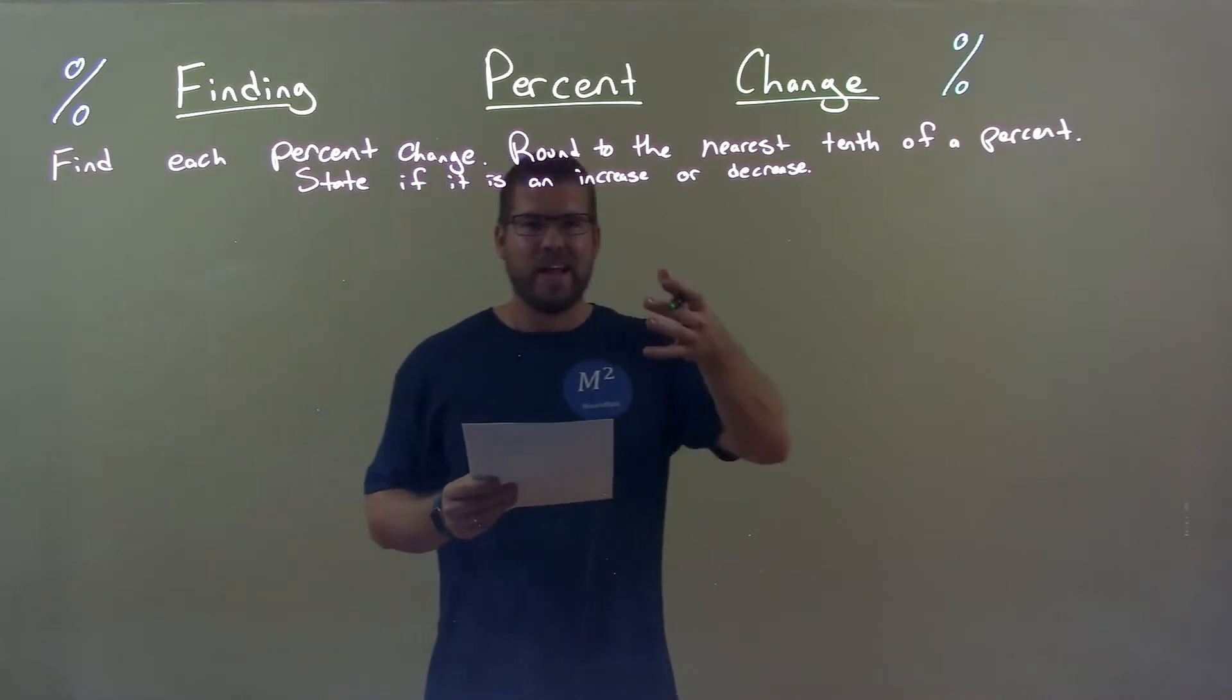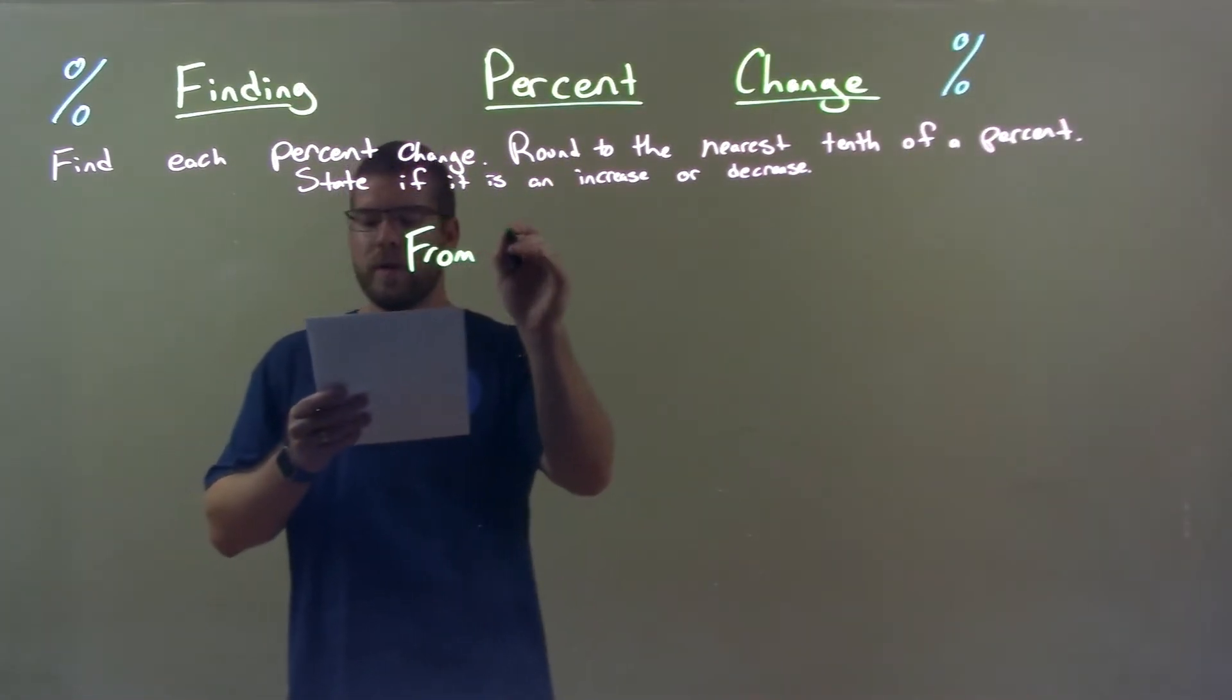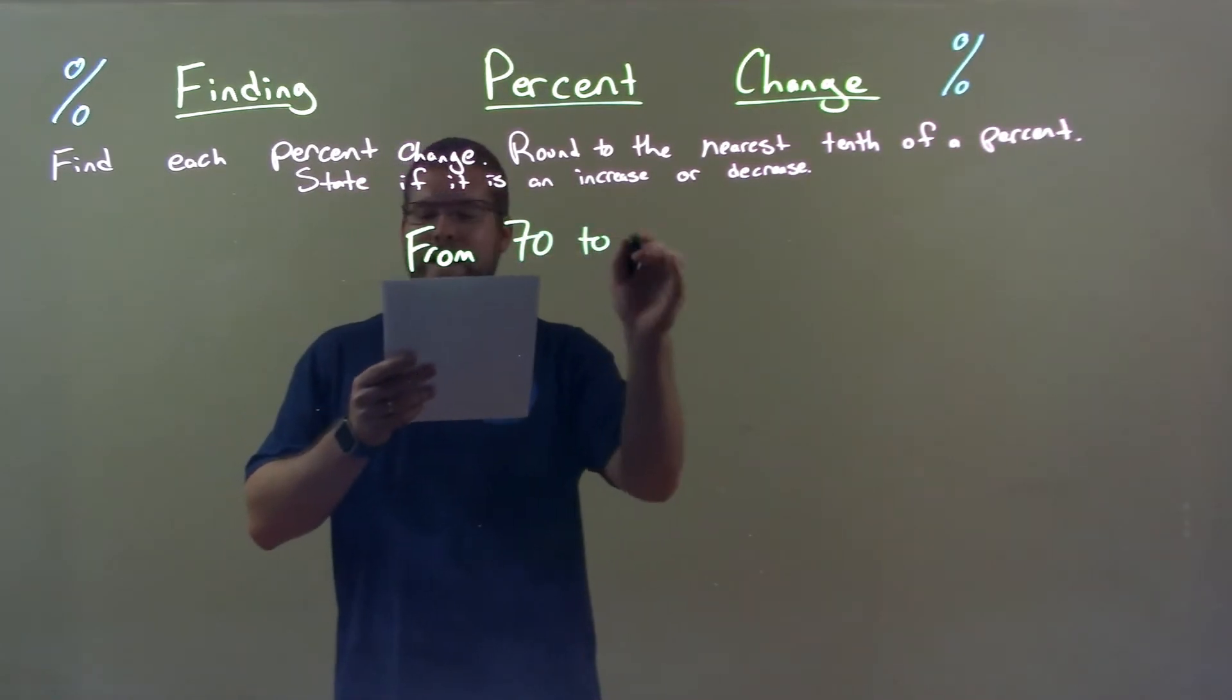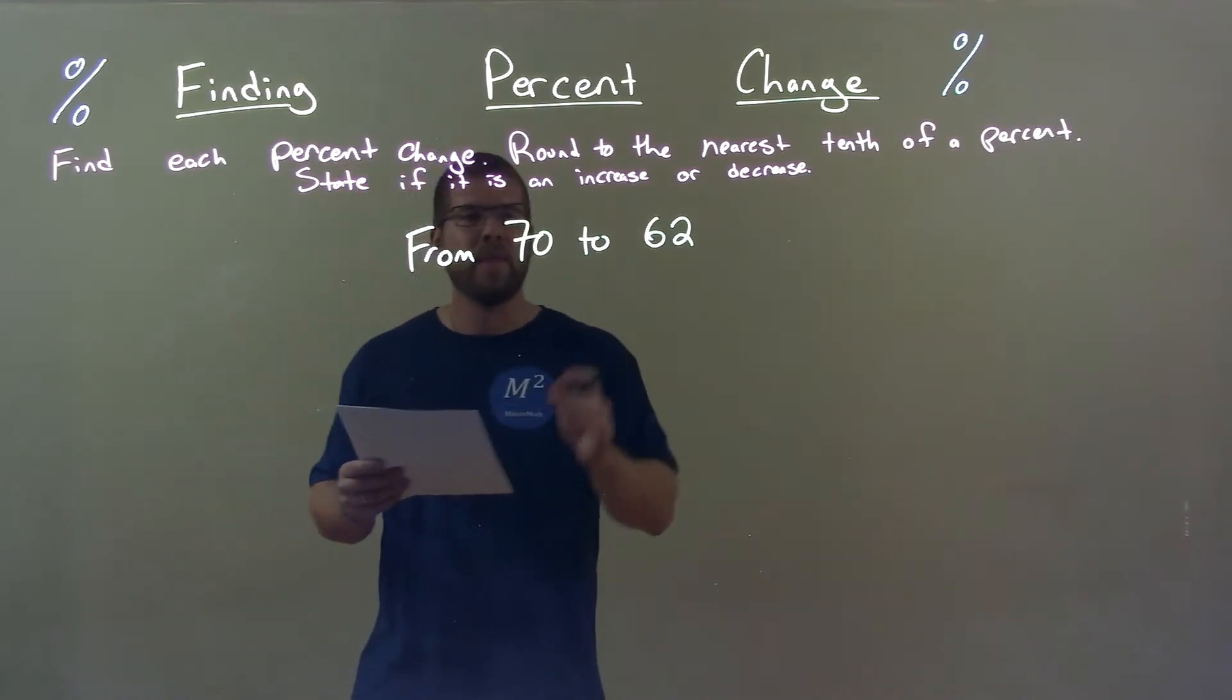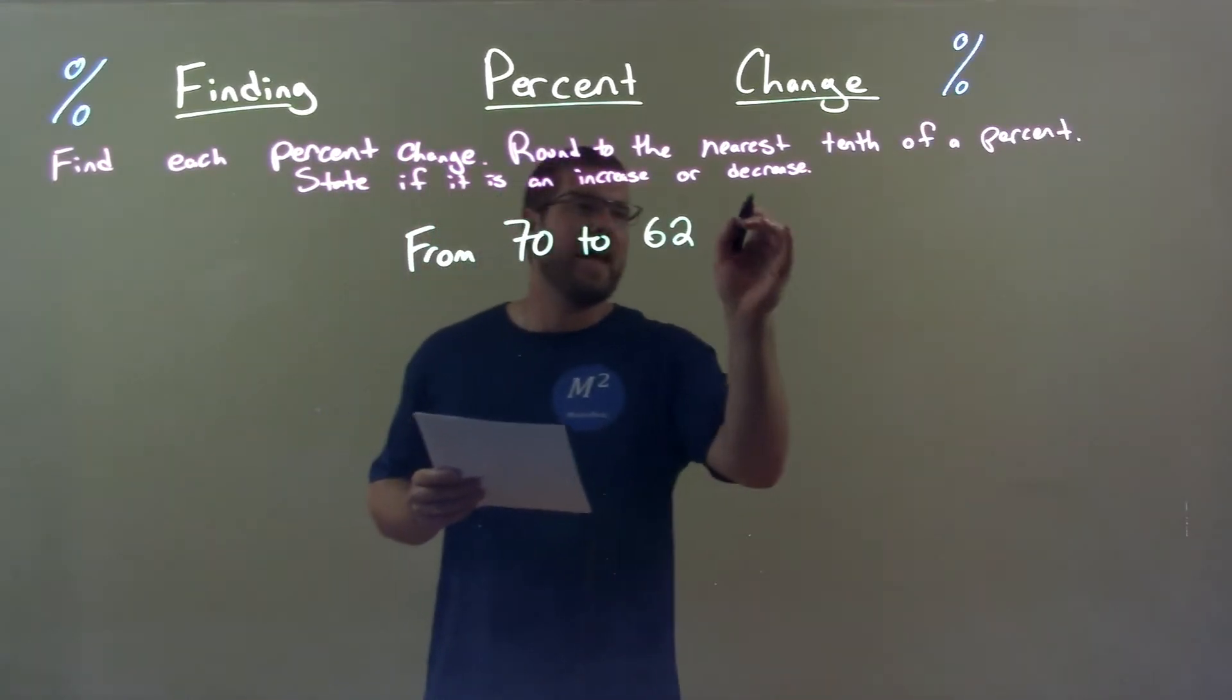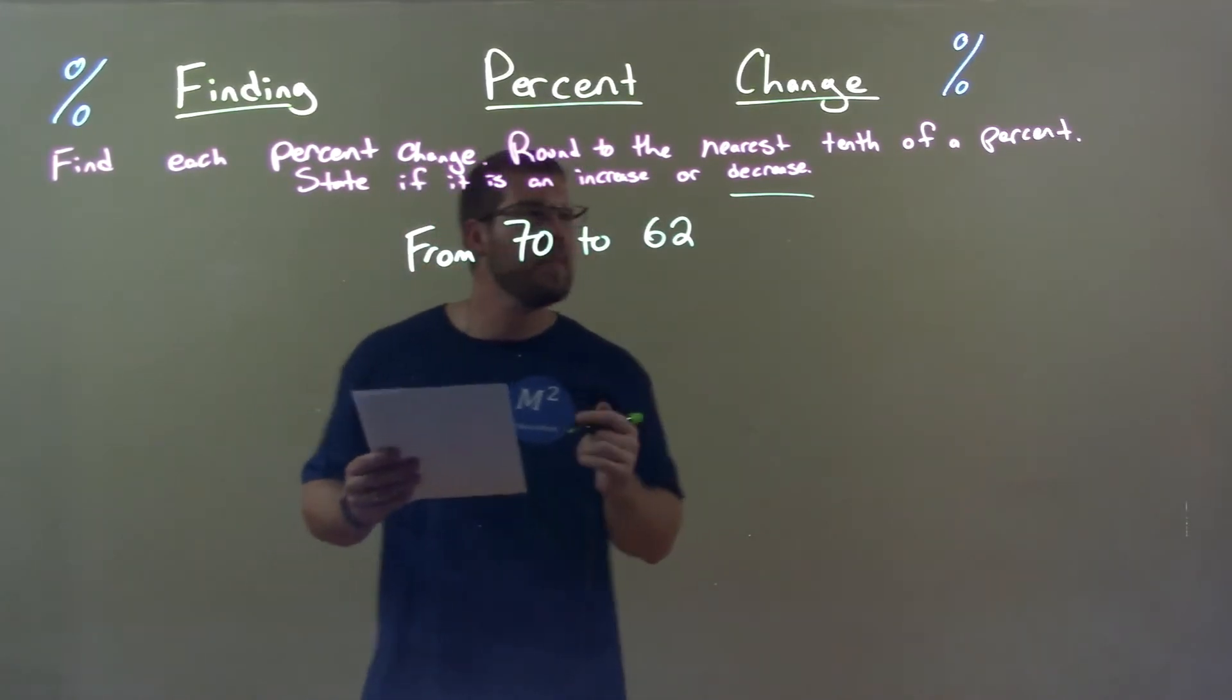So, if I was given this problem from 70 to 62, that's from 70 to 62. Well, first we see that's clearly a decrease. 70 to 62, we're going down.